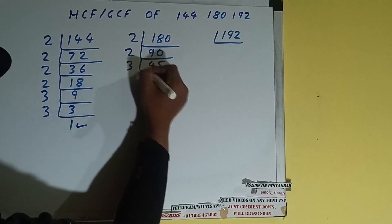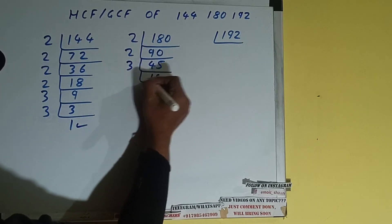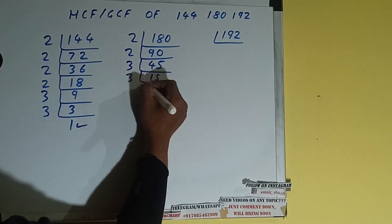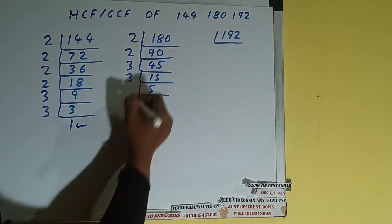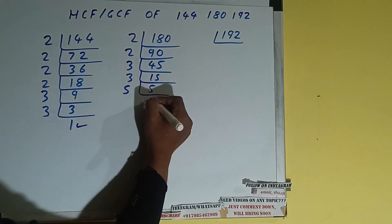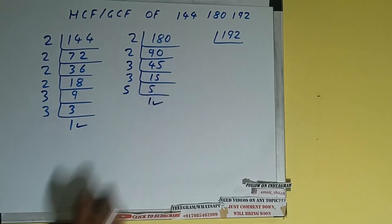Is 45 divisible by 3? Yes it is, so divide it and we'll get 15. 15 is again divisible by 3, giving us 5. 5 is not divisible by 3, and 5 is itself a prime number, so it is only divisible by itself, that is 5. Once we do so we'll get 1, and once we get 1 we are done.